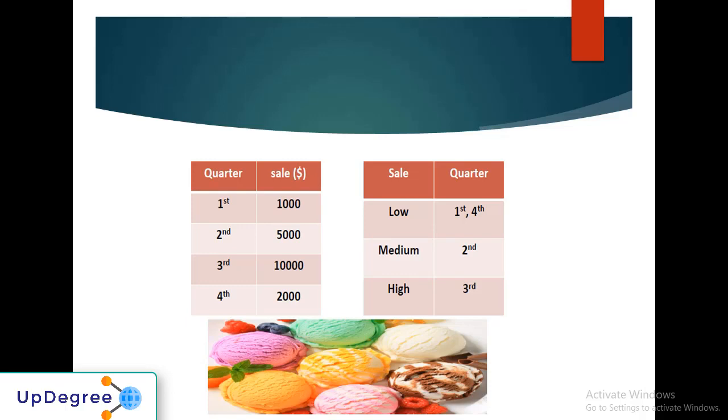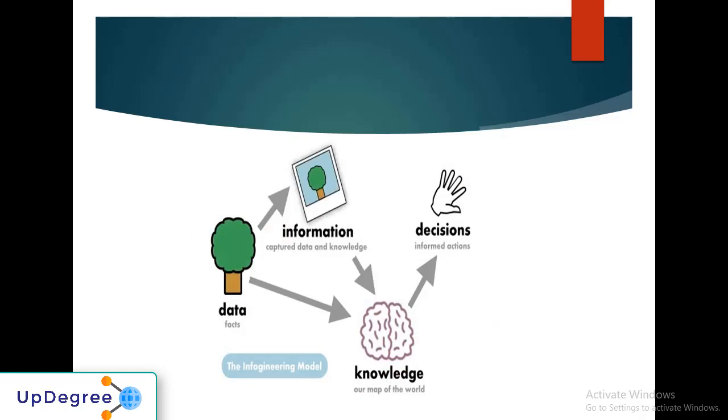Here is the flowchart. First we have data, which are the raw facts we saw earlier. Then you process that and get information, like we interpreted that during the first quarter sales were low and high in other quarters. That's the knowledge you get. From that, you take actions or decisions for your business. This data gives us information, from information you gain knowledge, and from knowledge you take decisions which will change your business or personal lives. This is the model that data mining runs on.